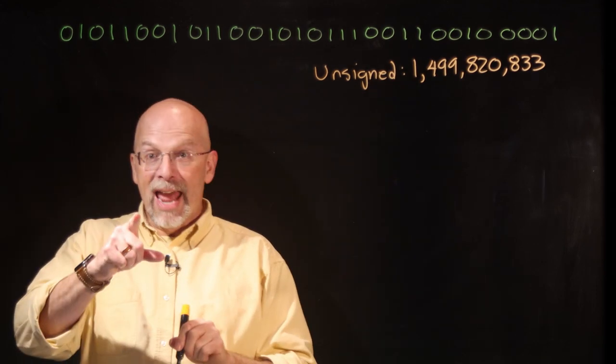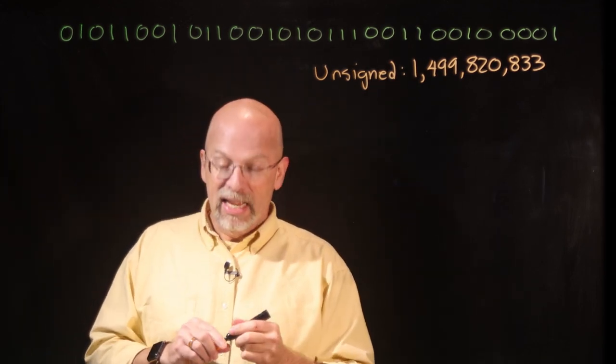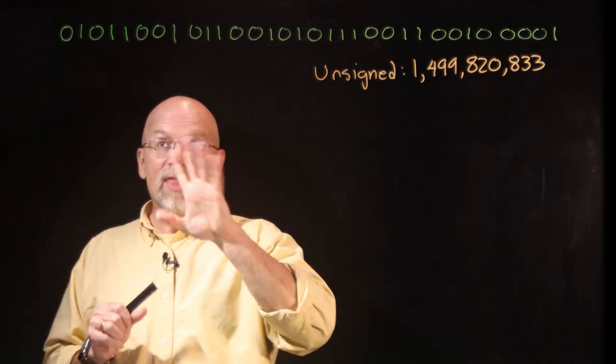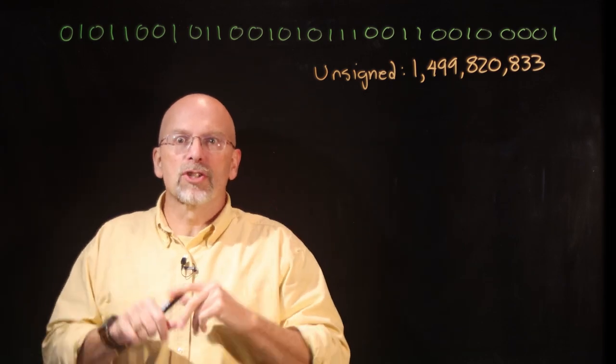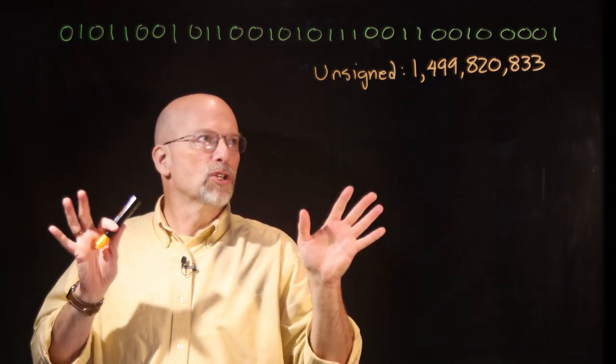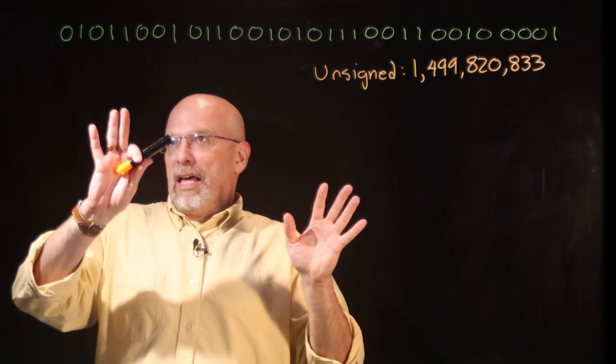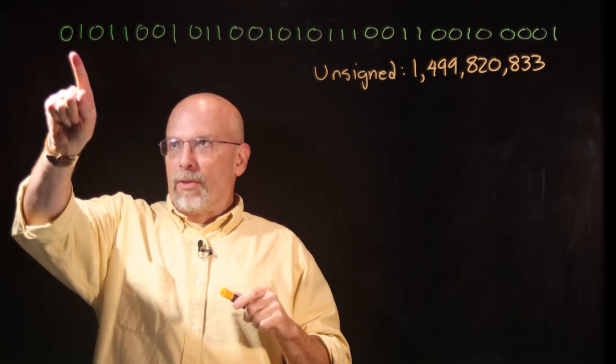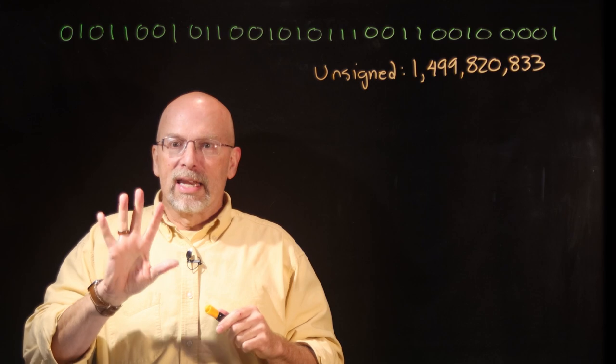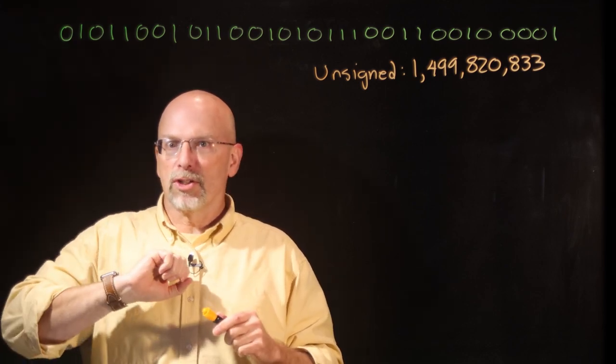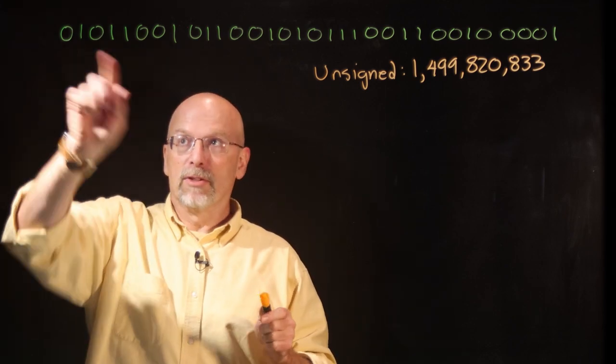Okay, now it could be signed. If it was signed, 2's complement, this could be a positive or negative number. This most significant bit would identify it as a positive number if it starts with a zero, a negative number if it starts with a one. Fortunately, it starts with a zero.